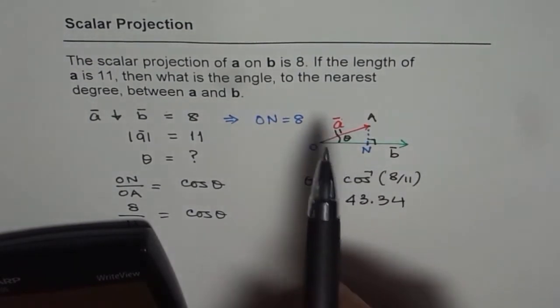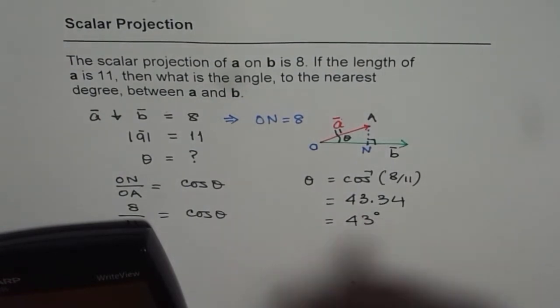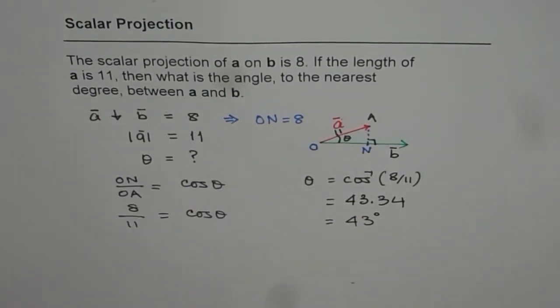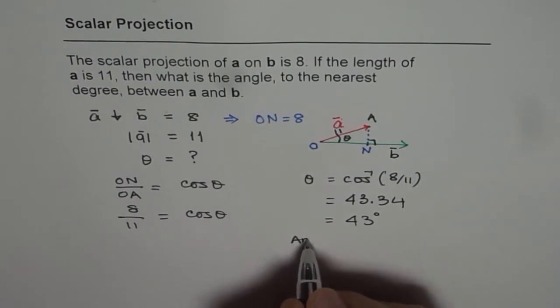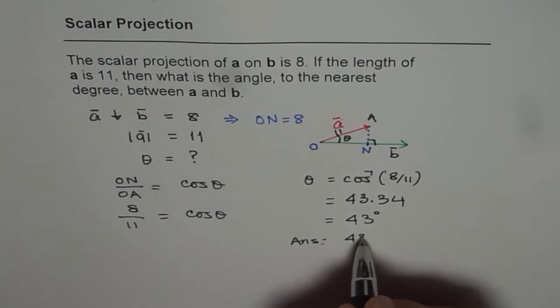Now this could be rounded to nearest degree. So we will round this to nearest degree. It becomes 43 degrees. So that is our answer. The answer is the angle between vector A and B is 43 degrees.